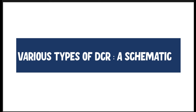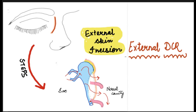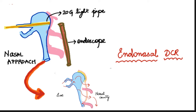Based on the surgical technique used to create this ostium, DCR can be classified into different types. If we approach the lacrimal sac through an external skin incision, that is referred to as external DCR or conventional DCR. In endonasal DCR, the ostium is created through the nose using an endoscope. An illuminating lead pipe is inserted into the lacrimal sac via the puncta, causing the sac to glow and helping the surgeon identify it from the nasal cavity through the endoscope.